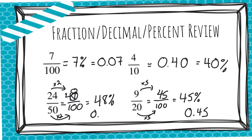The decimal for 24 fiftieths — sorry I skipped that — would be 48 hundredths. Your keyword that you have to type in at the end of the video is going to be taco.